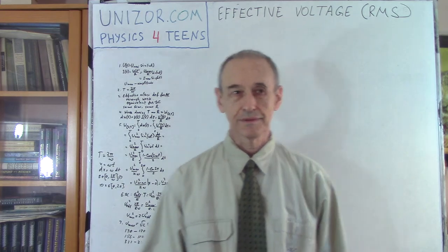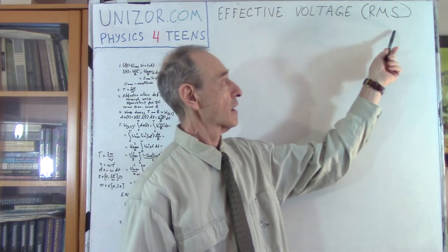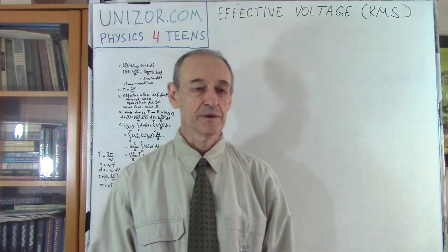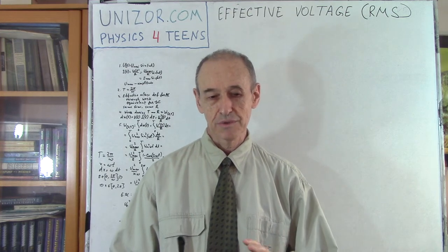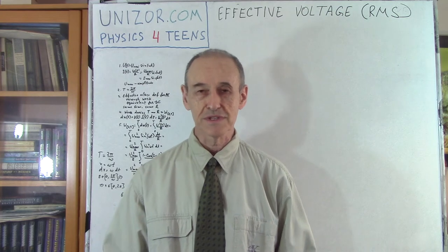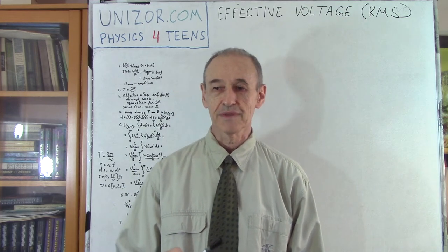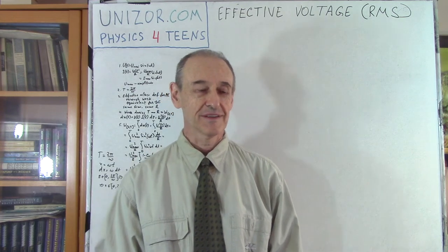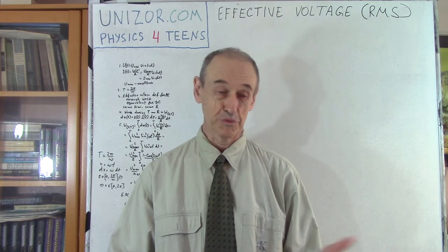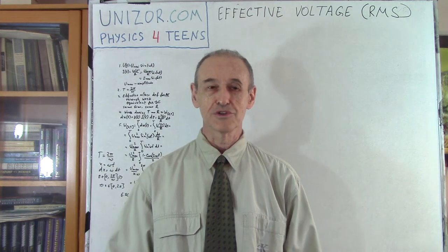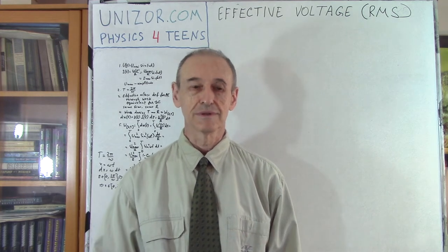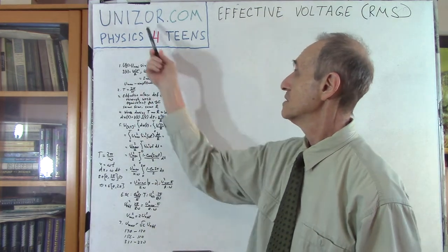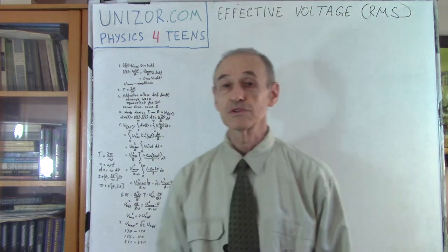There is another abbreviation which is usually used — RMS — and I will explain what each letter means in this particular case. Today's lecture is, in one way, kind of easy because there is not too much physics in it, but at the same time there is some math. I'll take an integral to prove the formula you might have been given by your teachers or professors without the proof, and I will derive this particular formula. This lecture is part of the course called Physics for Teens, presented on unizor.com.